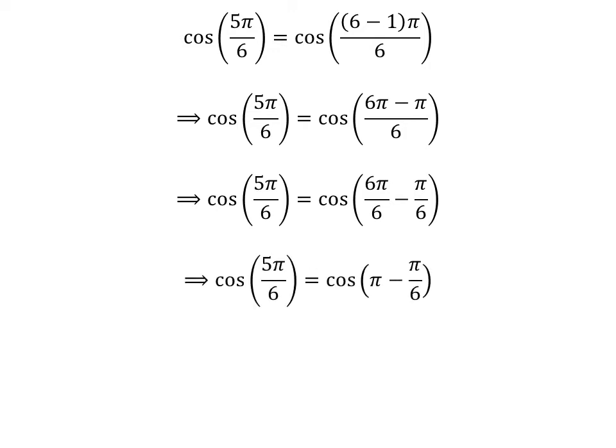Cancelling out the common factor in the numerator and the denominator gives us cosine of 5 times pi upon 6 is equal to cosine of pi minus pi upon 6. We know the famous trigonometry identity: cosine of pi minus x is equal to minus cosine of x. The proof of this identity has been explained in the video appearing in the upper right corner, and the link is also given in the description section.